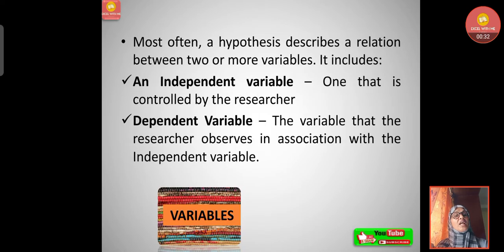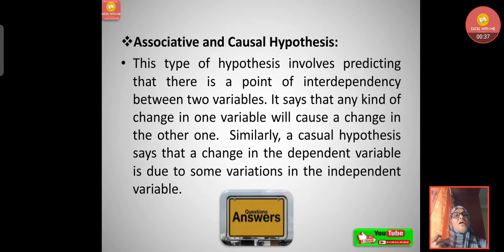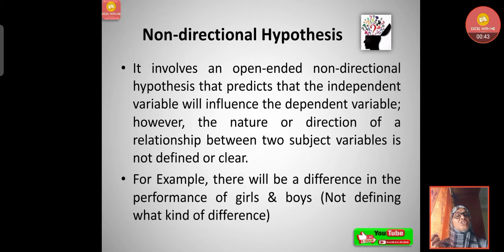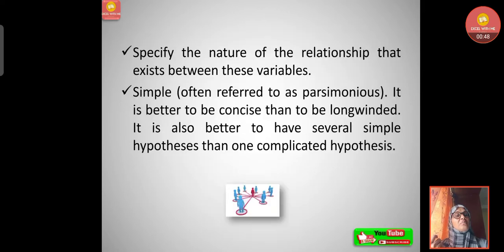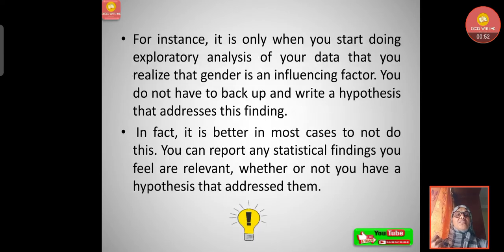And also we understood the different hypothesis: null hypothesis, alternative hypothesis, simple, complex, associative and causal hypothesis, directional and non-directional hypothesis. We understood clearly and also formulating how to formulate the hypothesis. Today we are going to discuss about characteristics of a good hypothesis.